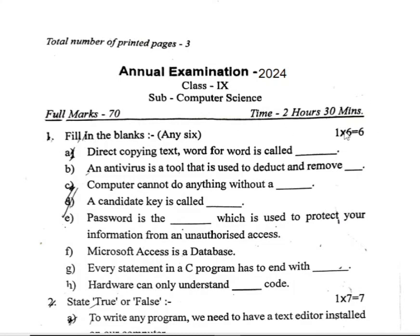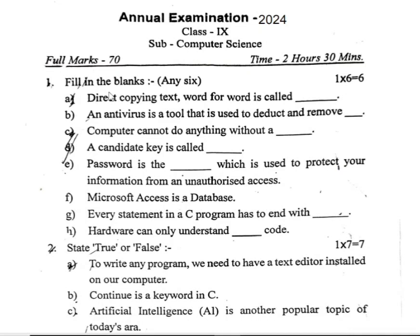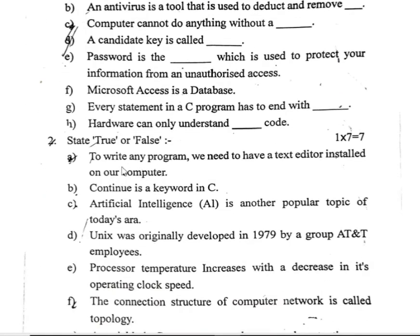First section: Fill in the blanks, questions one to six. Question one: Directly copying text word for word is called dash. Microsoft Access is a database. Hardware can only understand that code. Every C program has to end with a certain statement. A password is dash, which is used to protect your information.